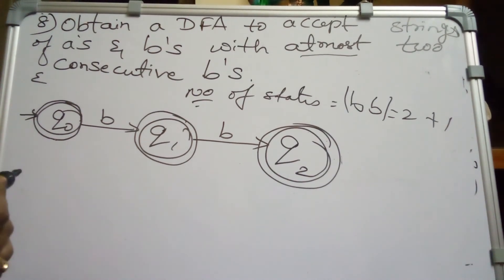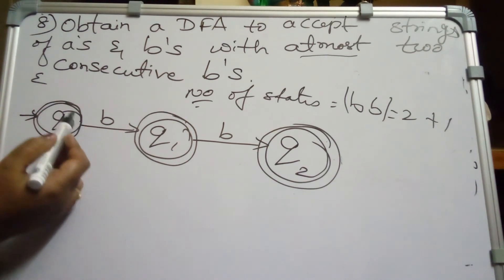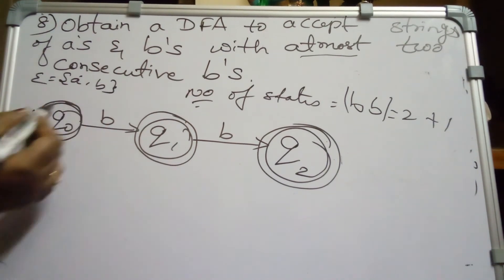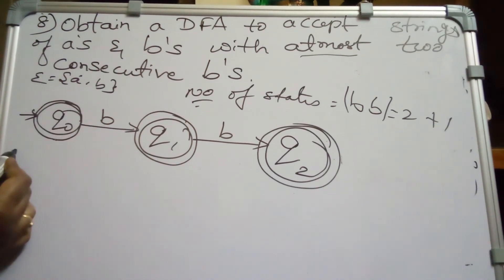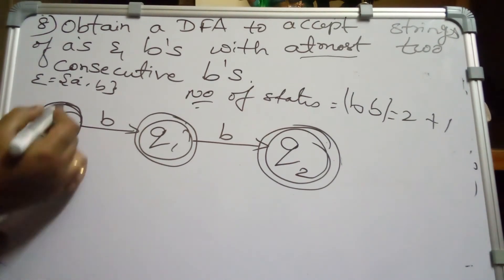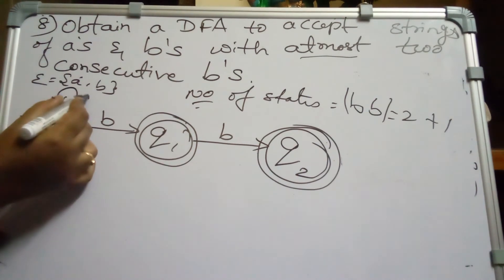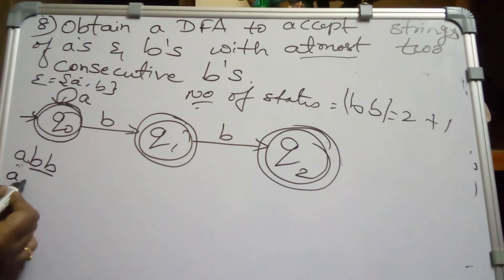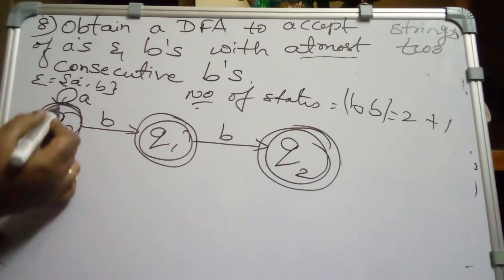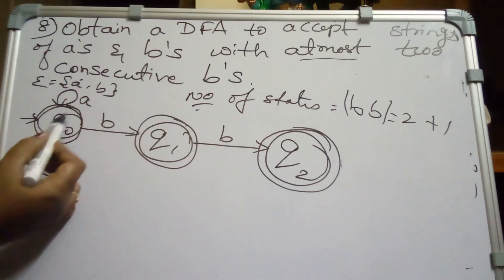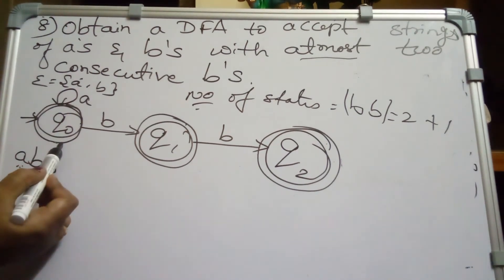The string can also begin with A. Q0 has input symbol A as well since Σ = {A, B}. On A the string can be like A, AB, or ABB. Since only A is also accepted and A behaves like resetting the count of B's, Q0 on A goes back to Q0 itself.